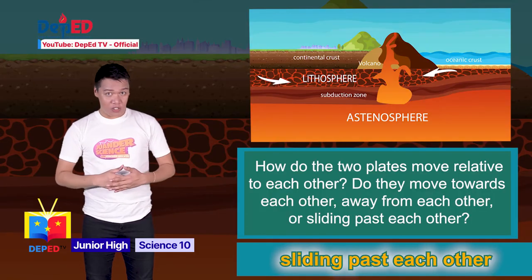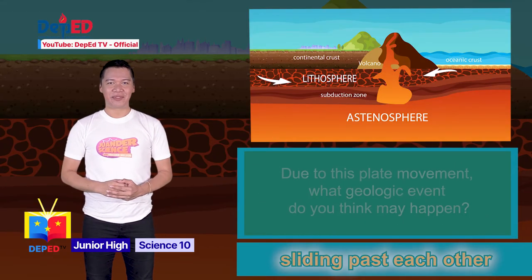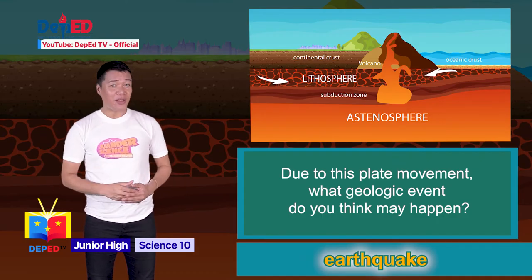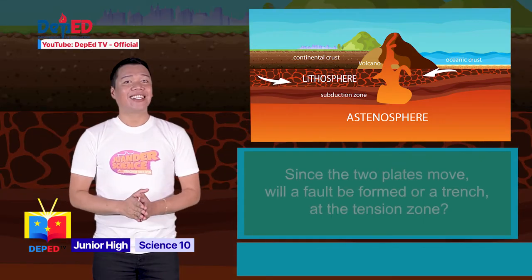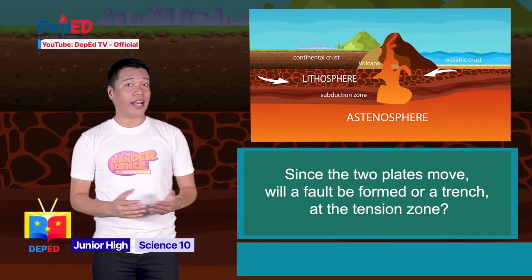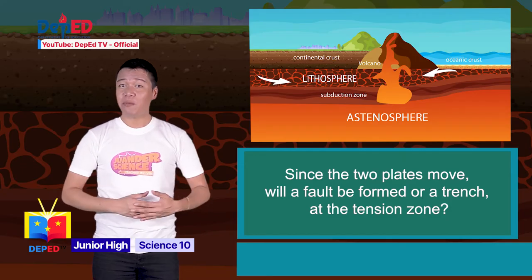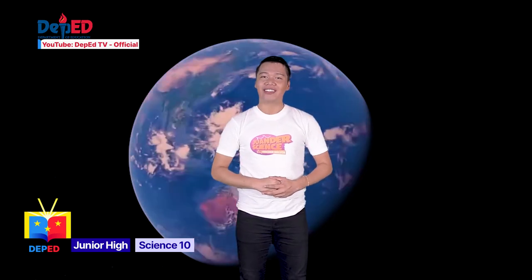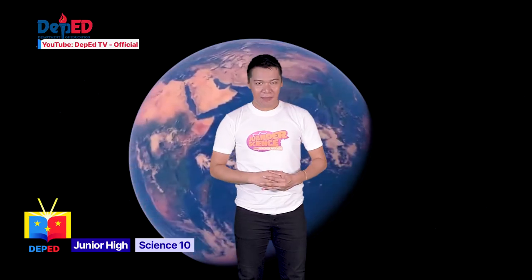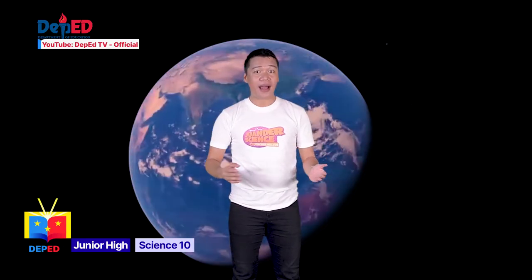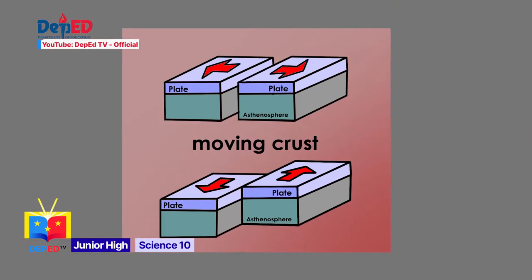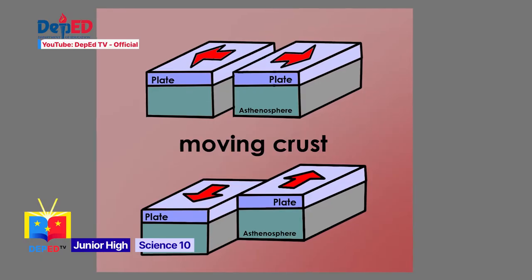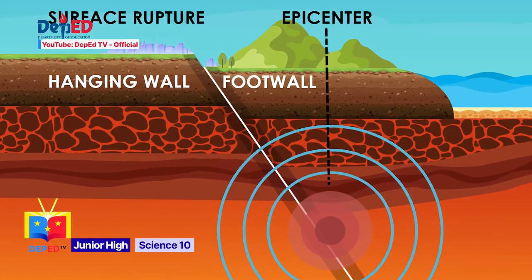If you're thinking about sliding past each other, then you are correct. Due to this plate movement, what geologic event do you think may happen? If your answer is earthquake, you are absolutely right. Since the two plates move, will a fault be formed or a trench at the tension zone? The answer would be fault. Transform-fault boundaries are mostly found in oceans, but a few traverse through continental crust. They are characterized by plates moving horizontally against each other, producing a crack called a fault on the ground. The force plates exert can break rocks and other materials underground. The shaking usually ends abruptly, which is why it brings about strong earthquakes.